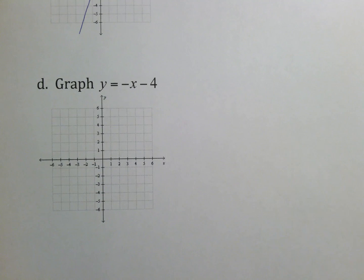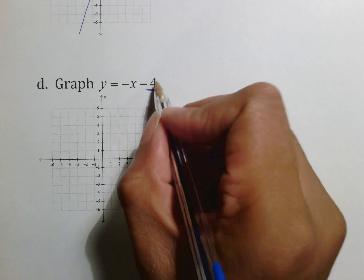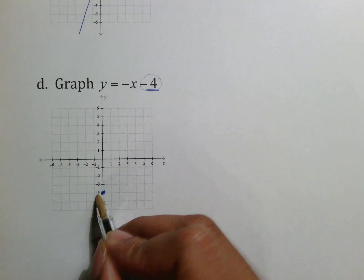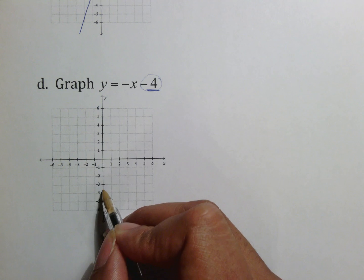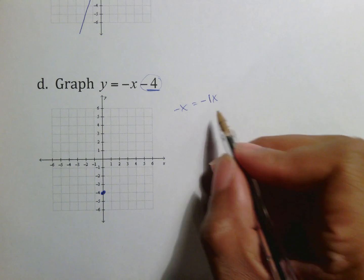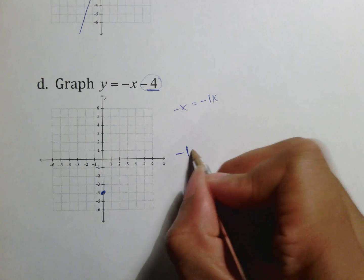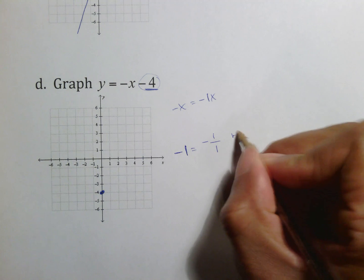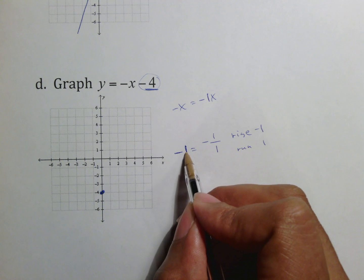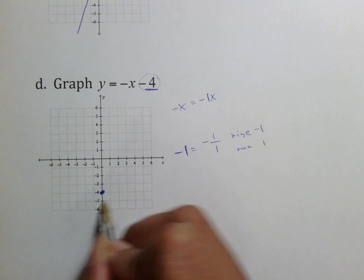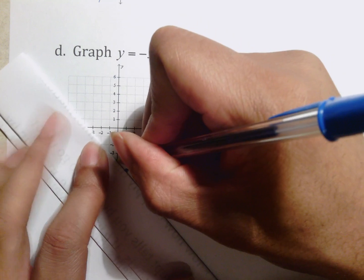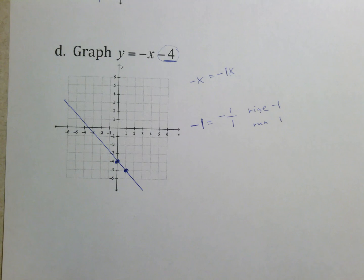Graph y equals negative x minus 4. The y-intercept is negative 4, which tells me to go down 4 — I have to use that first because I cannot apply rate of change without a starting point. Negative x is the same as negative 1x, so my rate of change is negative 1. Negative 1 over 1 means rise negative 1, run 1 — go down 1, always run at least 1 to the right. From the y-intercept, go down 1 over 1, put the second dot, then draw the line all the way across.